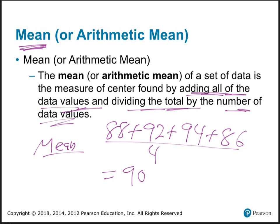That was the David Robinson example — real data. The mean is not always the best average. For figuring out your average grade in class it's excellent, it does a great job of telling you the middle. But for data sets with super big or super small numbers — outliers — adding them up and dividing isn't a very good way to find the middle.